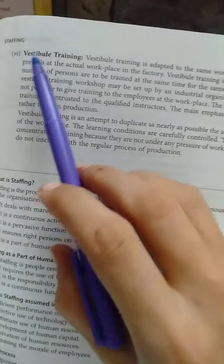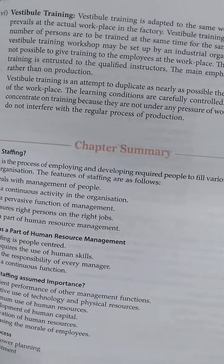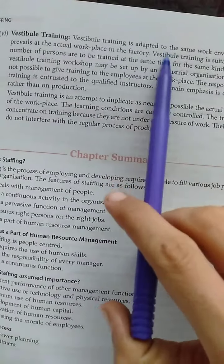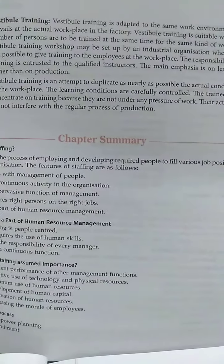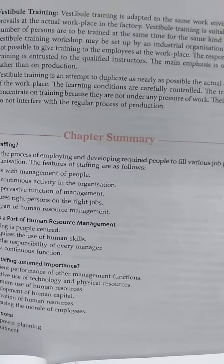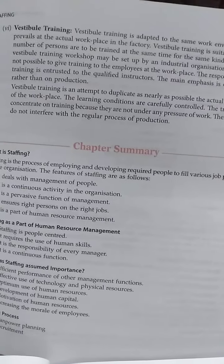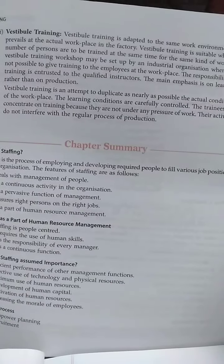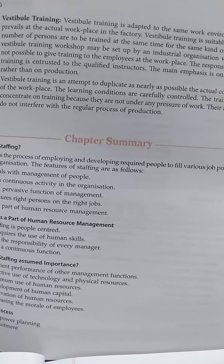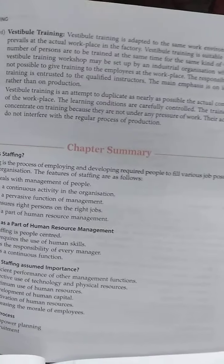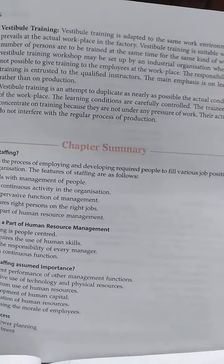Now comes the last point — vestibule training. This is the last point of this chapter, after this we are finished with the chapter. Chapter staffing ends here. Vestibule training is adapted to the same work environment as prevails at the actual workplace in the factory. Aisa environment create kar diya jaata hai bilkul jaisi ki actual workplace ho factory mein. Yeh suitable hota hai jahaan bahut saare logon ko ek saath training deni ho, ek time par, ek hi tarah ke kaam par. Uske liye ek setup create kar diya jaata hai — let's suppose koi nayi machinery aa rahi hai, toh ek saath saare logon ko train karna hai, toh woh machinery setup kar di jaati hai, sabhi ko bula liya jaata hai, expert ko bula liya jaata hai aur woh unko train karta hai.